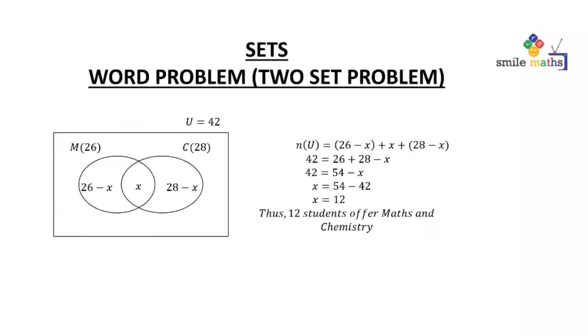Now we know that number of elements in U is 42, so it is going to be equal to 26 plus 28. That is removing the brackets, and I'm going to be left with minus x because negative x plus x will cancel each other.